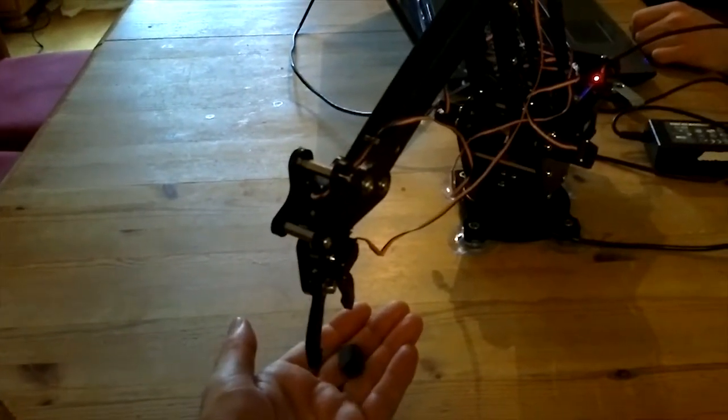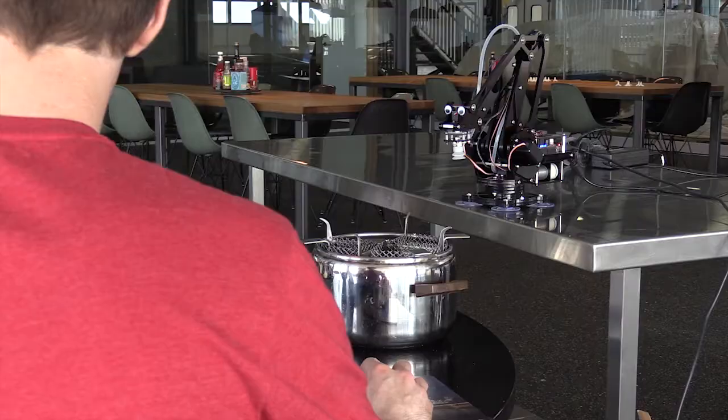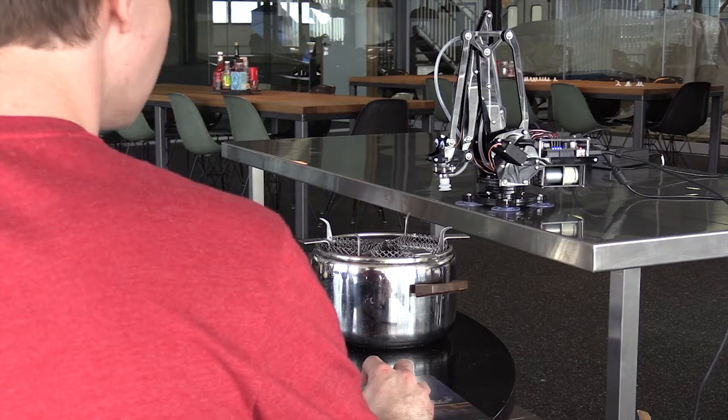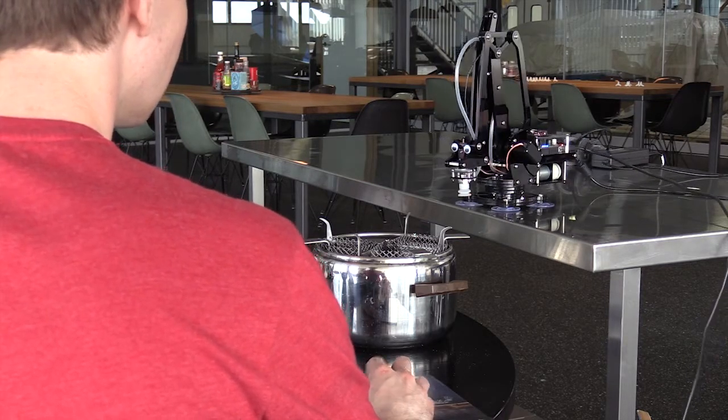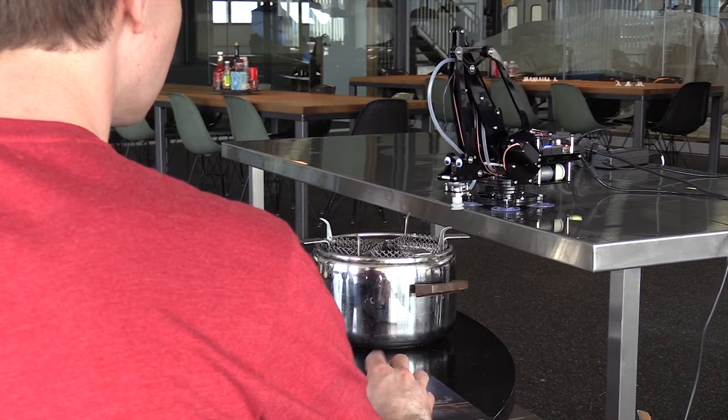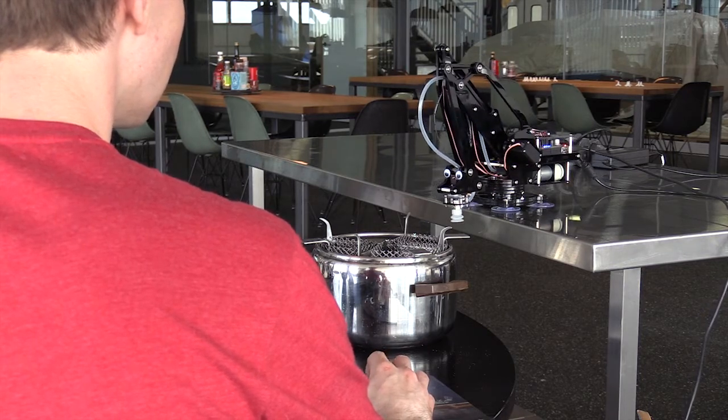Now we can test the arm and see if it can do what we wanted to. So we'll make it pick up a little frying basket out of a pot.